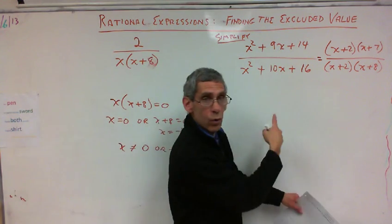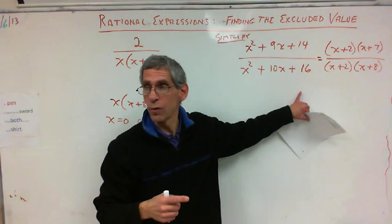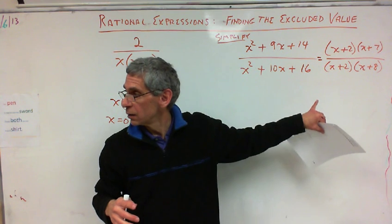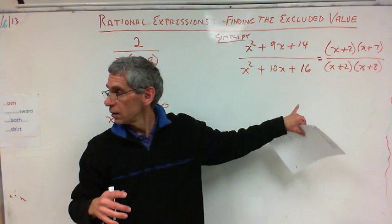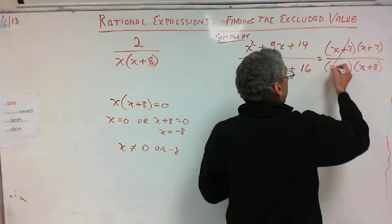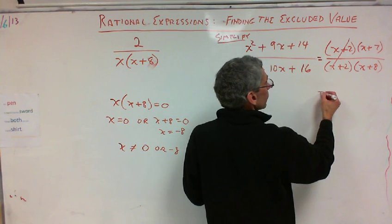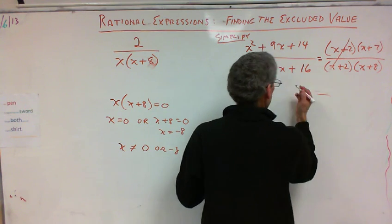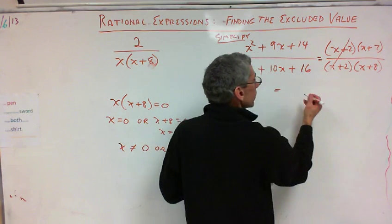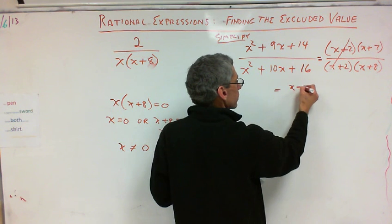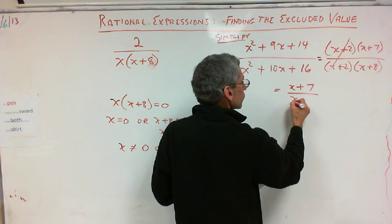So, what would I do to finish my problem? Like you've been doing. Like you did last night. Crossed out. Crossed out what? X plus 2. Right. So that can be crossed out. So really my answer is, my answer is x plus 7 over x plus 8.